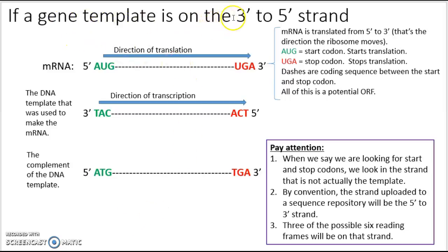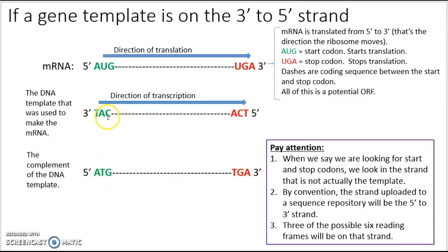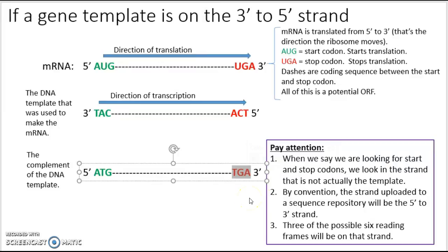If the gene template is on the 3' to 5' strand — here's the sequence of DNA, here is the start codon, and here is the stop codon — this is the template strand, and transcription is going to occur in this direction, producing this messenger RNA in this orientation. This strand has a complementary anti-parallel strand, as do all DNA molecules that make up chromosomes. When we look at the complement of the DNA template, that's where we see ATG — what we look for when searching for start codons — and TGA, what we look for when searching for stop codons.